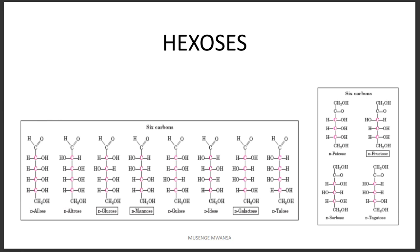We also have hexoses. If we look at glucose and mannose, they are basically the same — they only differ at carbon number two, so they are structural isomers. Glucose and galactose are also basically the same — they only differ at carbon number four, so they are also isomers.